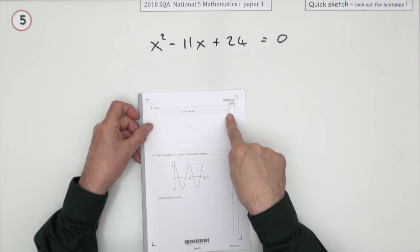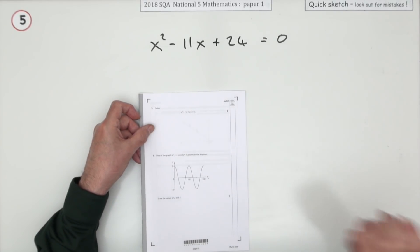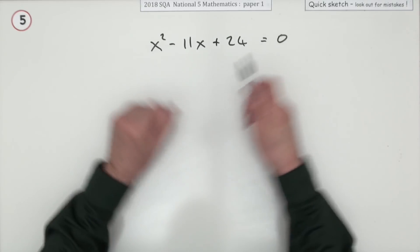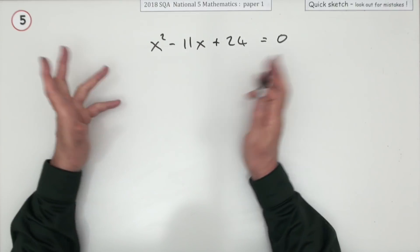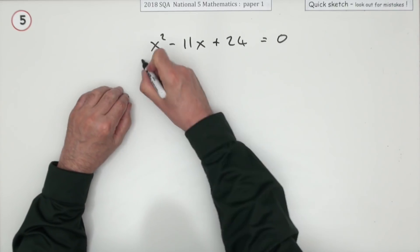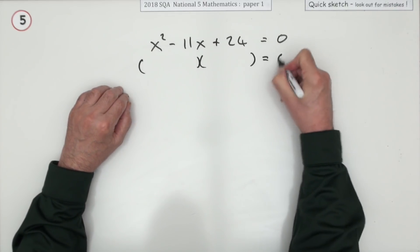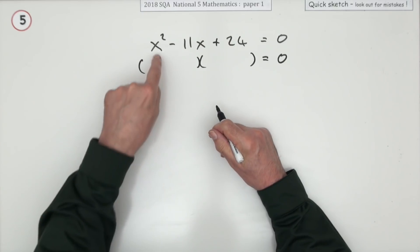Number five, just for two marks, solve this quadratic equation. Probably call that a trinomial because it's a quadratic with all three parts. That's the hardest one. Well, factorize it. It's quite easy to begin with because to make x squared, it can only be an x times an x.